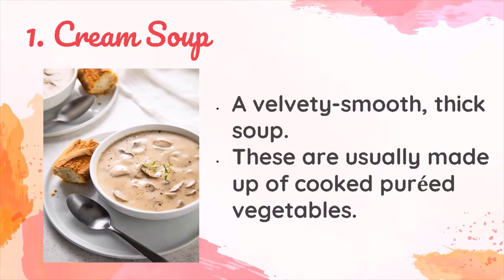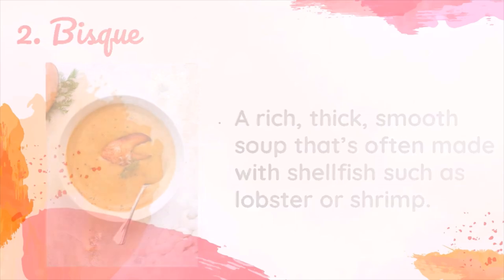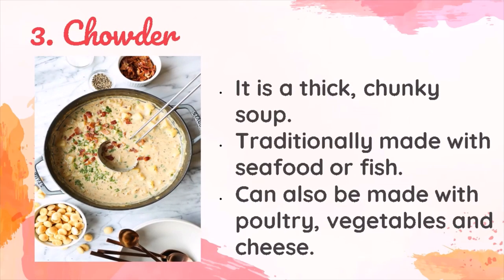Cream soup is a velvety smooth, thick soup. Cream soups are made with cooked vegetables that are sometimes pureed. Pureeing soup requires the vegetables to be cooked to a tender consistency so that they are easily folded into the soup — the term fold means to stir it gently. Cream soups may also be made with rich chicken broth. Bisque is a rich, thick, smooth soup that's often made with shellfish such as lobster or shrimp. Chowder is a thick, chunky soup. Traditionally, a chowder is made with seafood or fish, but chowders made with poultry, vegetables, and cheese have become popular.